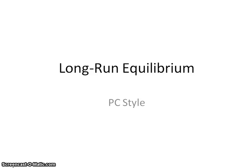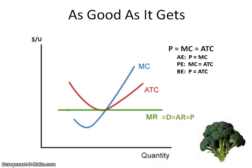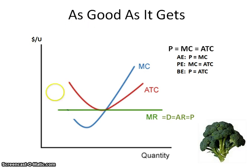This screencast is on long run equilibrium, PC style. The phrase I like to use when we talk about long run equilibrium for a perfectly competitive firm is 'as good as it gets,' because it is not going to achieve this many efficiencies as it does when it is in long run equilibrium.